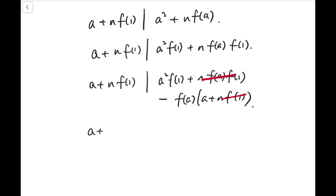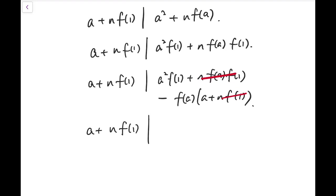So we cancel out this and this term, and we will have a plus n times f of 1 dividing a times a f of 1 minus f of a.